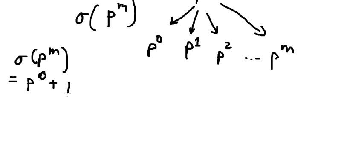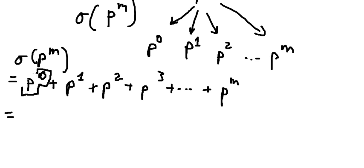This is 0, 1, 2, 3, and so on until P to the power of M. We know that P to the power of 0 equals 1. We can do factorization.